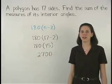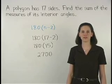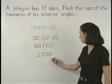So if a polygon has 17 sides, then the sum of the measures of its interior angles is 2700 degrees.